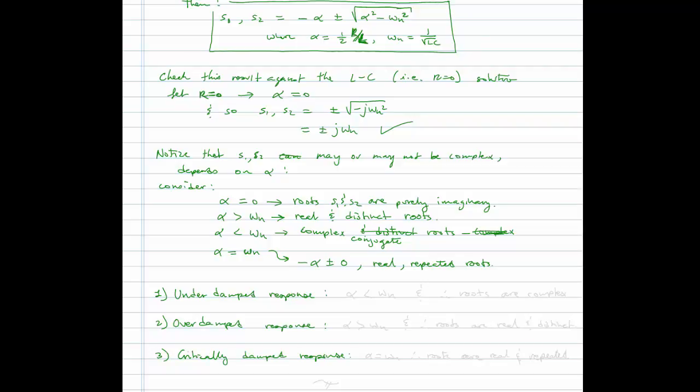Now we can group these together according to what we have already discussed being underdamped response and overdamped response and then critically damped response. An underdamped response occurs when the roots are complex, in other words alpha is less than omega n. Overdamped is when alpha is greater than omega n and therefore roots are real and distinct. And when alpha equals omega n, roots are real and repeated. The critically damped case is for a single value of alpha, whereas the underdamped and overdamped are both a broad or semi-infinite range of values.